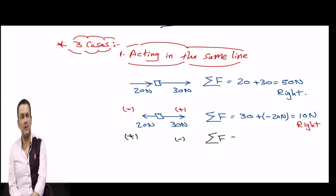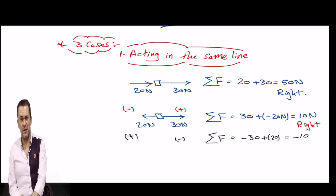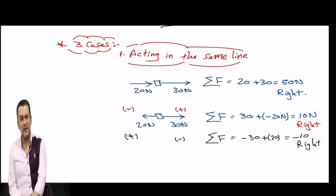The result of 10 Newtons has a positive sign, meaning it is in the same direction as what we considered positive. If you reverse your sign convention — considering right as negative and left as positive — you would say negative 30 plus 20, giving negative 10 Newtons. The direction still stays to the right, because negative in that case means right. We did not change the actual direction.